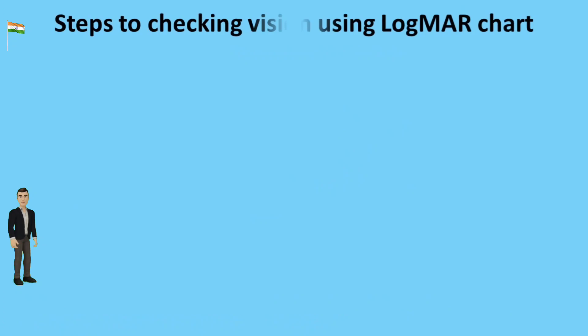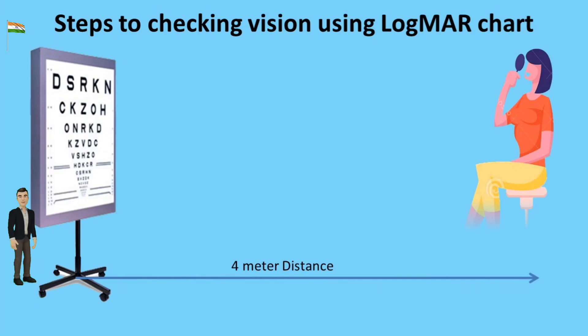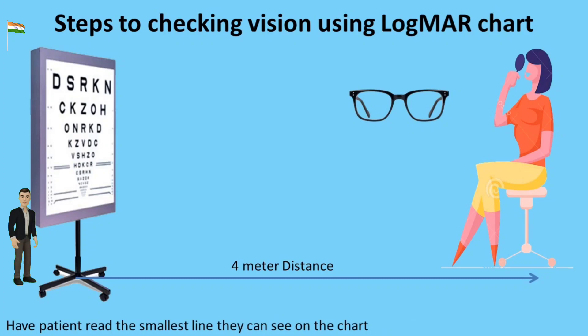Steps to checking vision using LogMAR chart: Have patient stand or sit at appropriate marking. If patient has glasses, make sure they are wearing the proper glasses for distance vision. Give patient occluder and have them cover the eye not being tested. Have patient read the smallest line they can see on the chart.